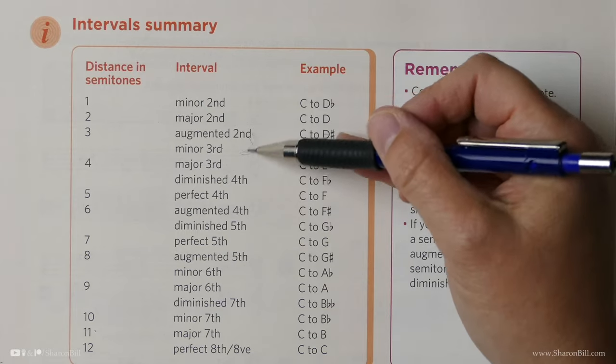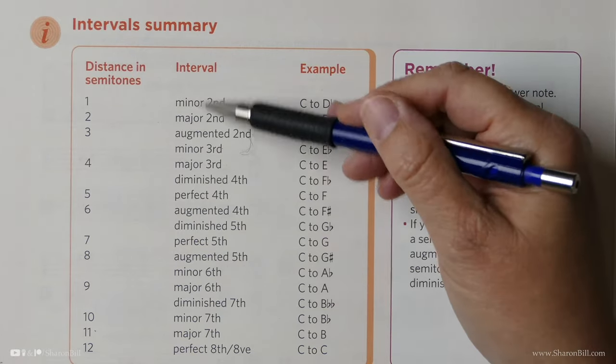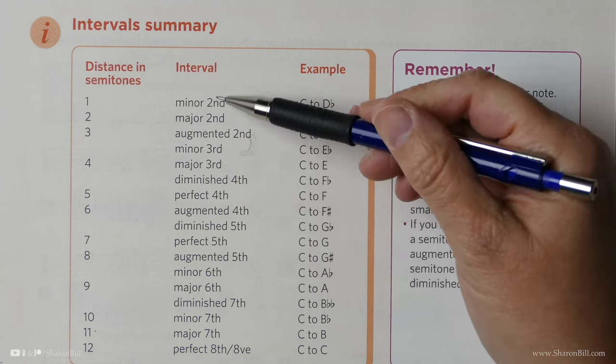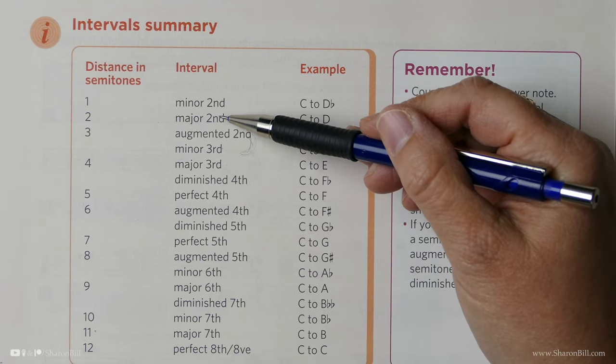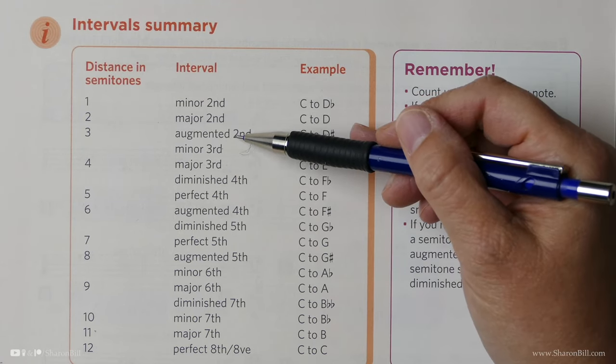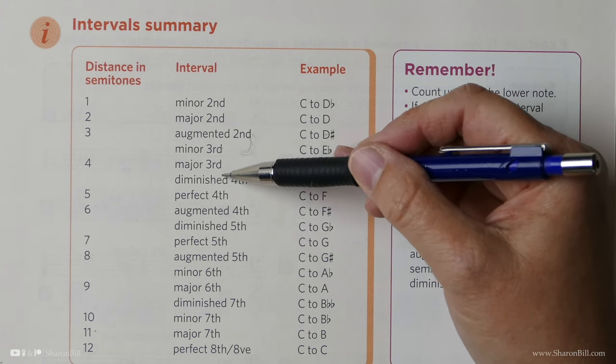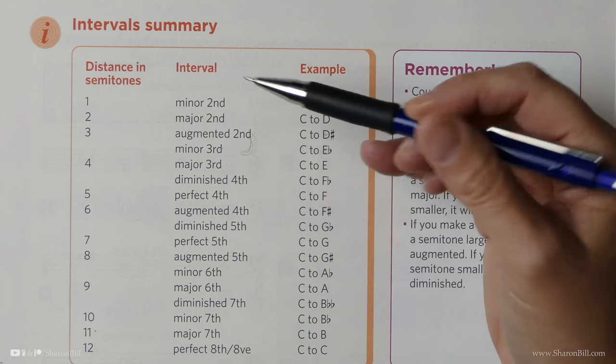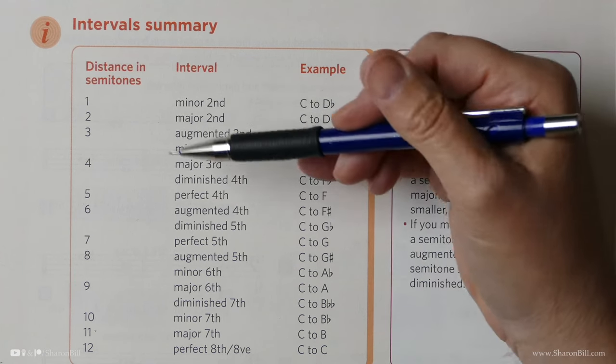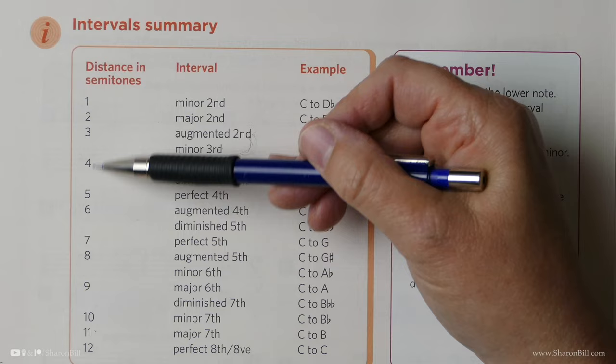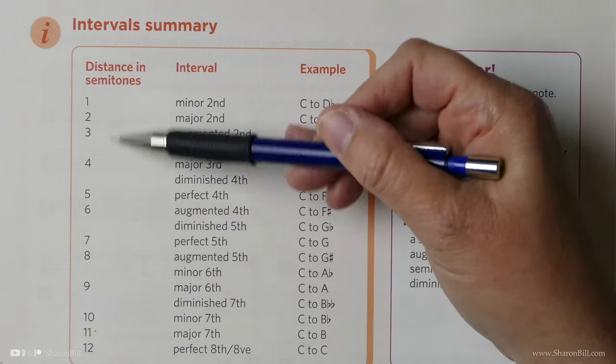And here we can see that we've got lots and lots of different intervals now. We've gone from minor to major, and then we've extended by semitone again to augmented. And we've got diminished as well, where we've got smaller and smaller after the minor. And the perfect, and we could count all of these individual semitones.